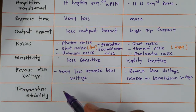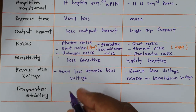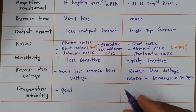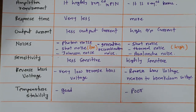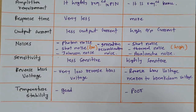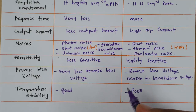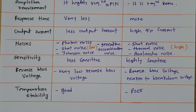Now, temperature stability: in PIN photodiode, temperature stability is very good. While avalanche photodiode has poor temperature stability. So temperature stability is poor in case of avalanche photodiode, and good in case of PIN photodiode.